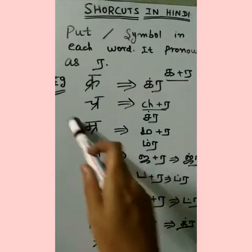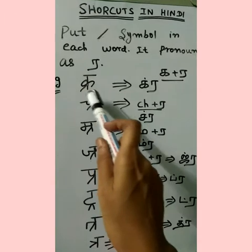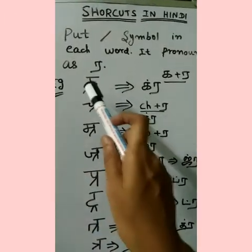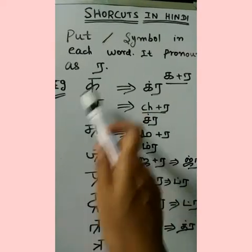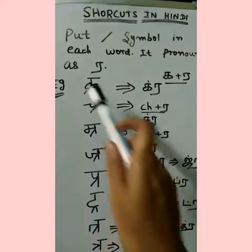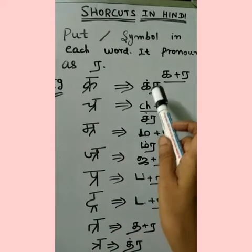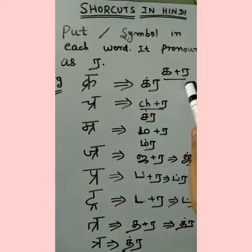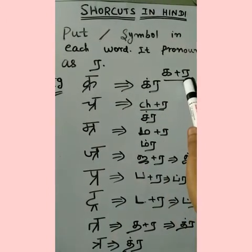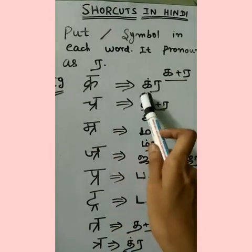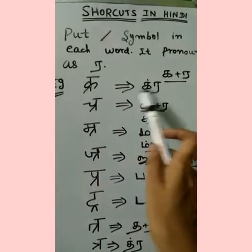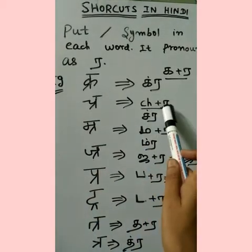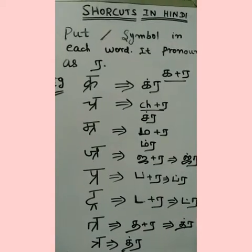Now let's look at the example. This symbol is a Kooltake symbol. This symbol is RA, so the second letter is the following word. Now let's look at the symbol — you sign it from one symbol to another symbol.